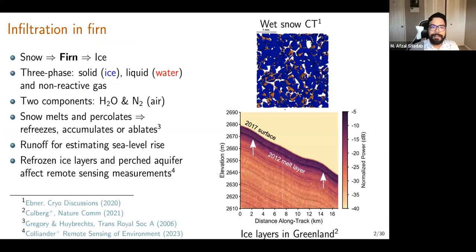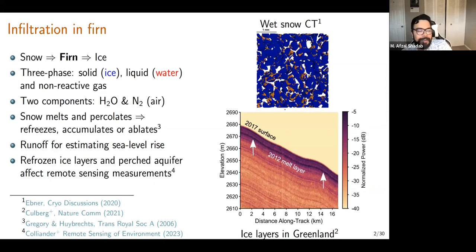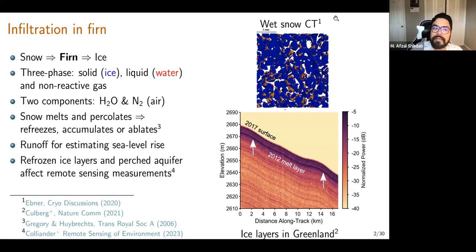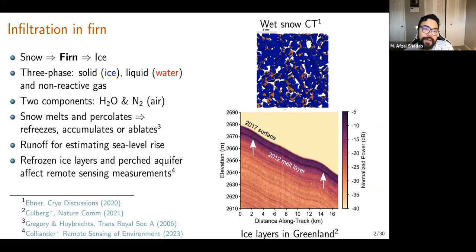Let's move on to infiltration in firn. Firn, as my friends say, is 'shit snow' — it is an intermediate between freshly fallen snow at about 315 kg/m³ and impermeable ice at more than 823 kg/m³, with a maximum density of 917 kg/m³.